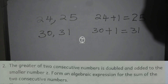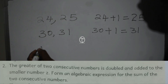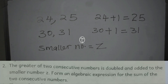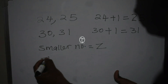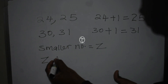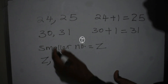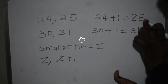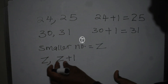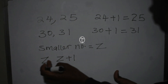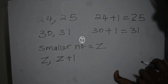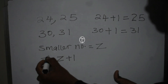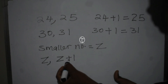Here in this question, we are told the smaller number is Z. That means the first number is Z, and to get the following consecutive number, we just add one, just as we did with the examples. If Z was 24, the next consecutive number is 24 plus one, which is 25. So if Z is the smaller number, the bigger number is Z plus one. The consecutive numbers are Z and Z plus one.